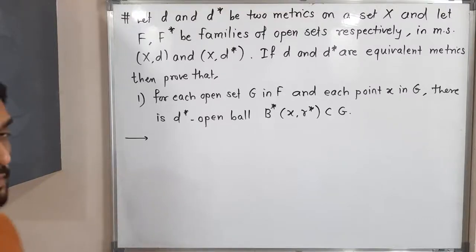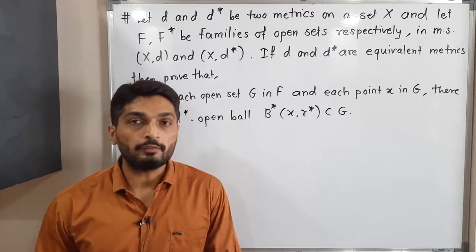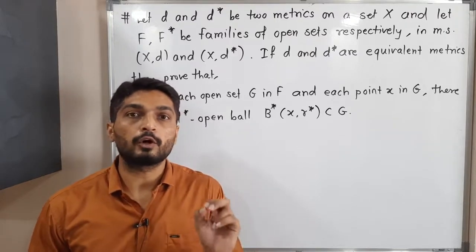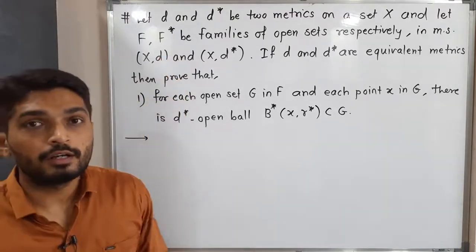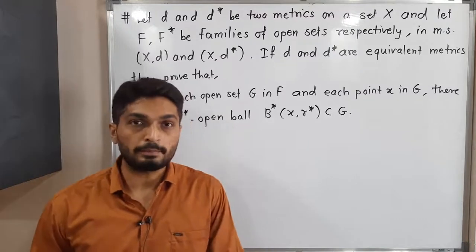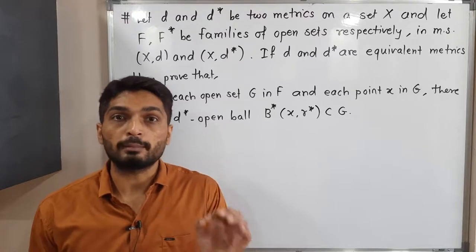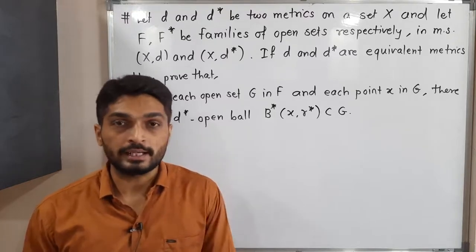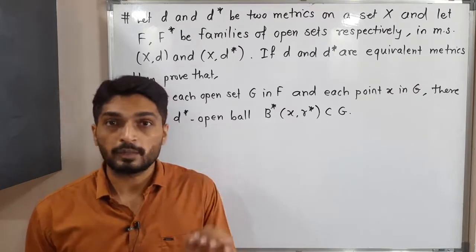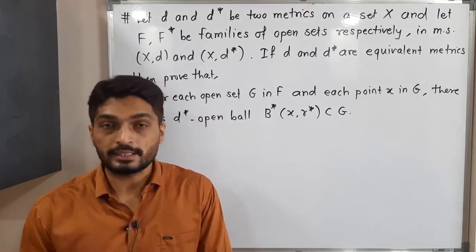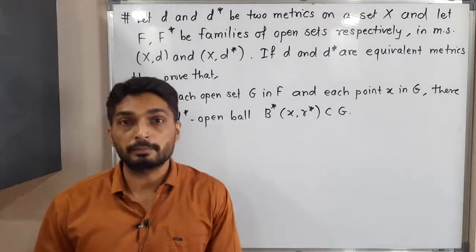Hi everyone, let us discuss this result. So in this result, we have a set X. And we have two metrics D and D star, both defined on X. F and F star denote families of D and D star open sets. That means in a metric space X D, we will have some open sets — F denotes the family of D open sets — and in a metric space X D star, F star denotes the family of D star open sets. The given information is D and D star are equivalent metrics.